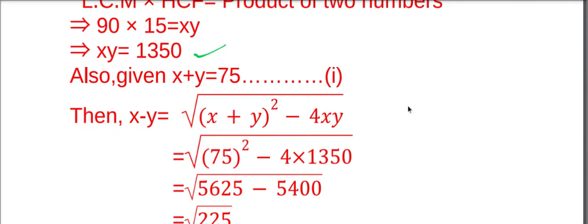Since X minus Y whole square equals X plus Y whole square minus 4XY, therefore X minus Y equals square root of X plus Y whole square minus 4XY.